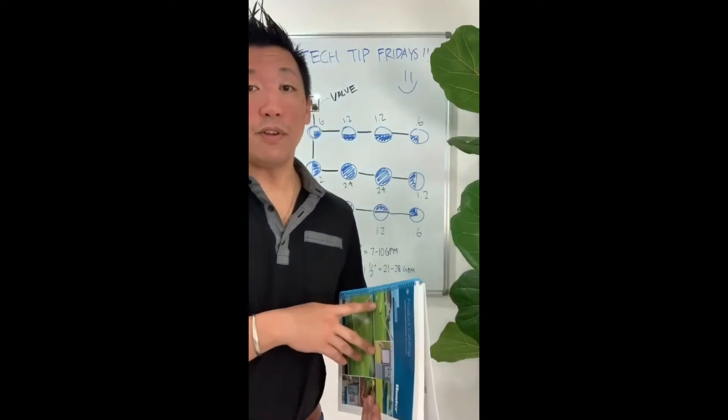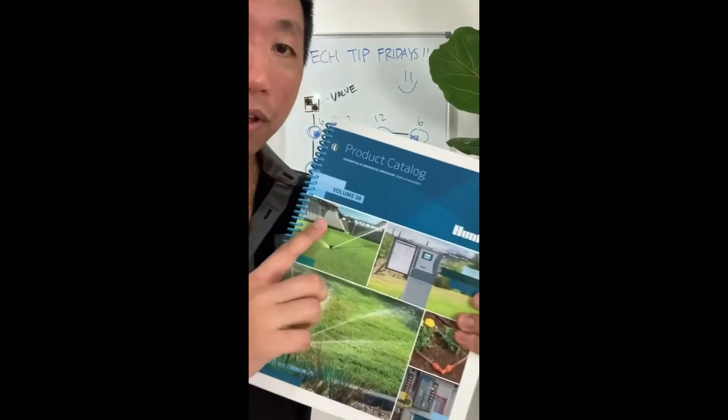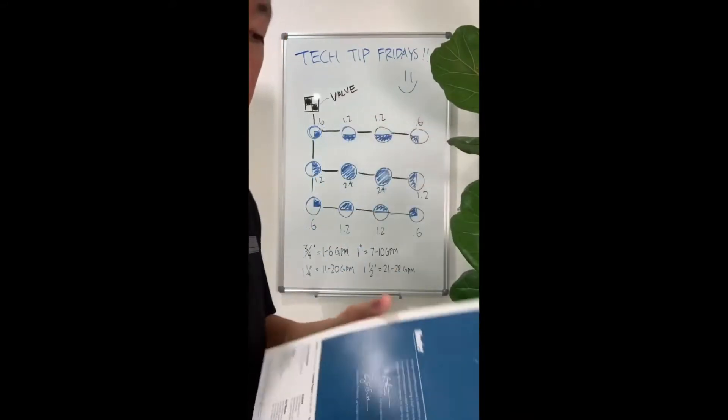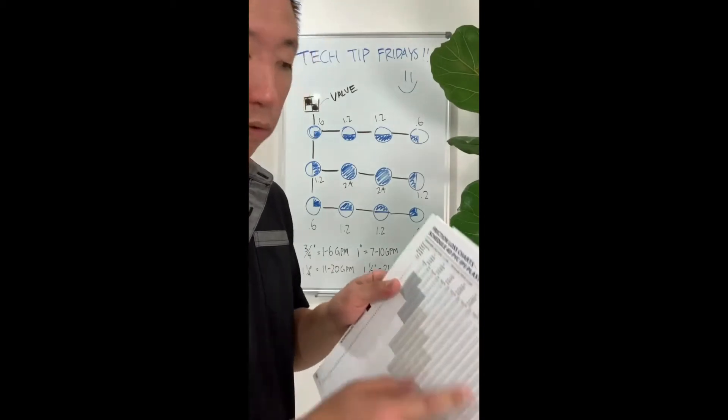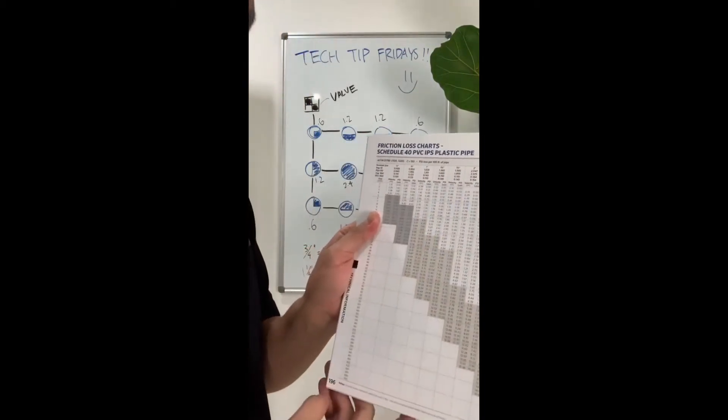So everything that you need to know about pipe sizing is in our catalog. Now the latest catalog is volume 38, and the page that we'll be looking in particular today would be the Schedule 40 PVC plastic pipe on page 196.